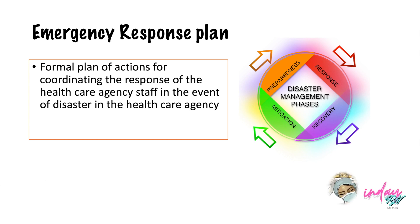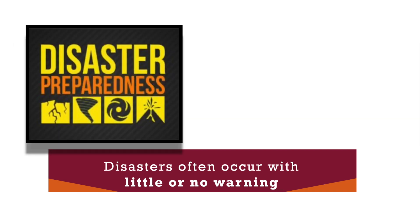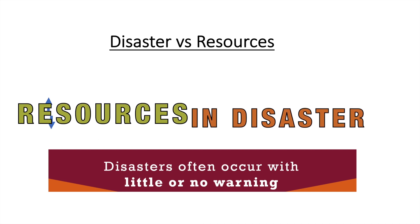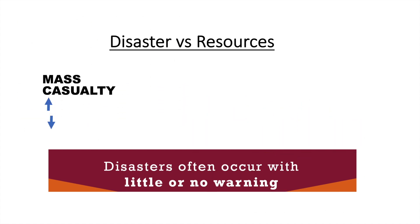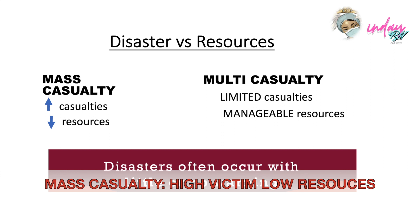Disaster often occurs with little or no warning, so as a nurse you need to be prepared, especially regarding your resources. In order for management to declare mass casualty or multi-casualty — in a mass casualty event, there is an increased number of casualties or victims coming in, but you have a decreased number of resources. You need to declare mass casualty when the number of victims is greater than the number of manpower and resources you currently have.